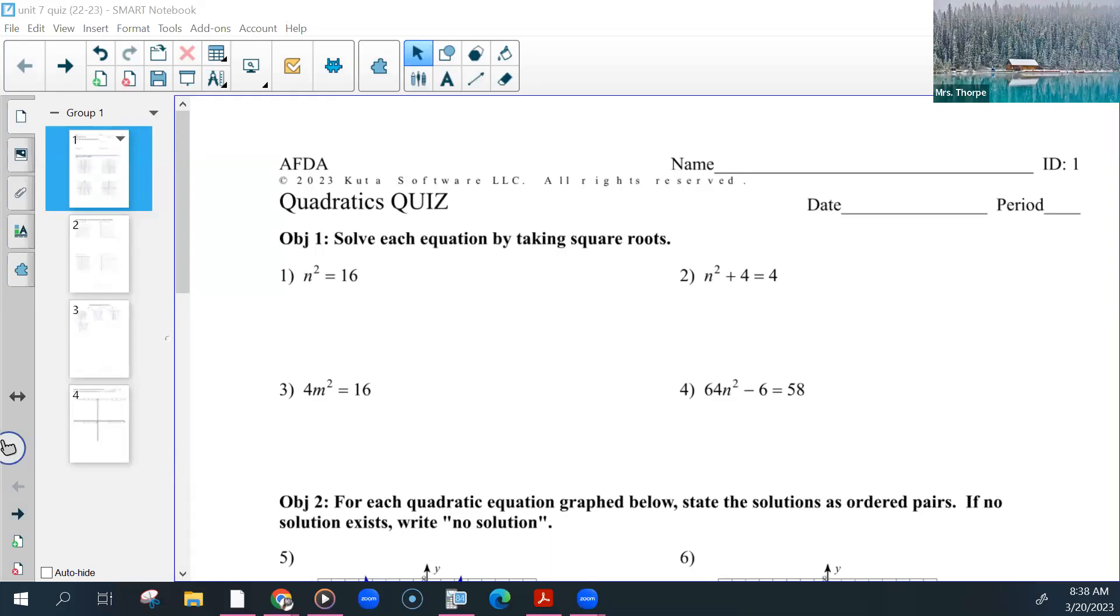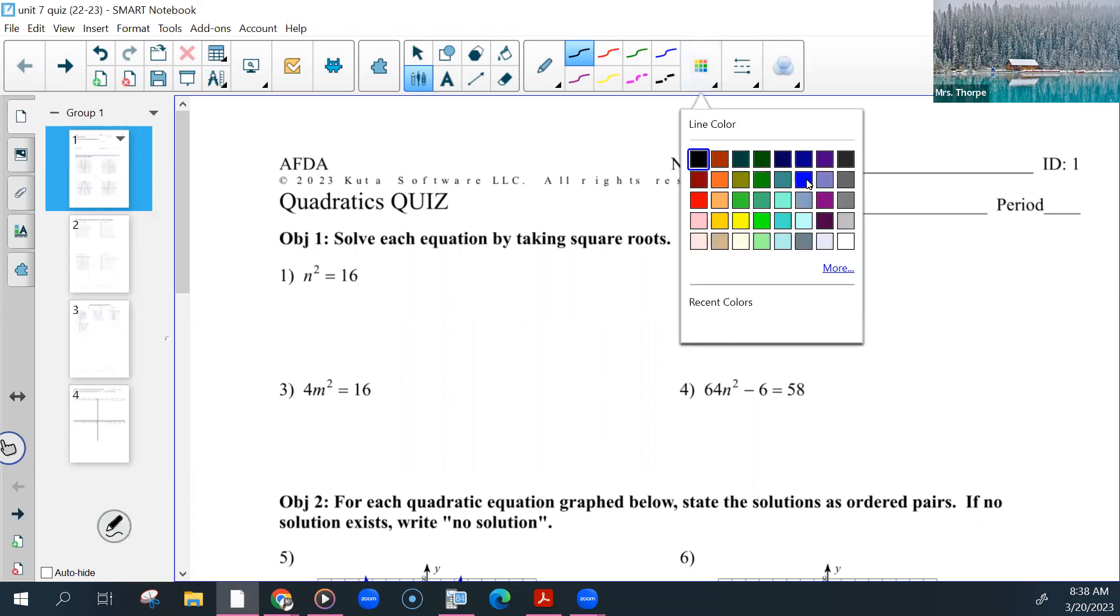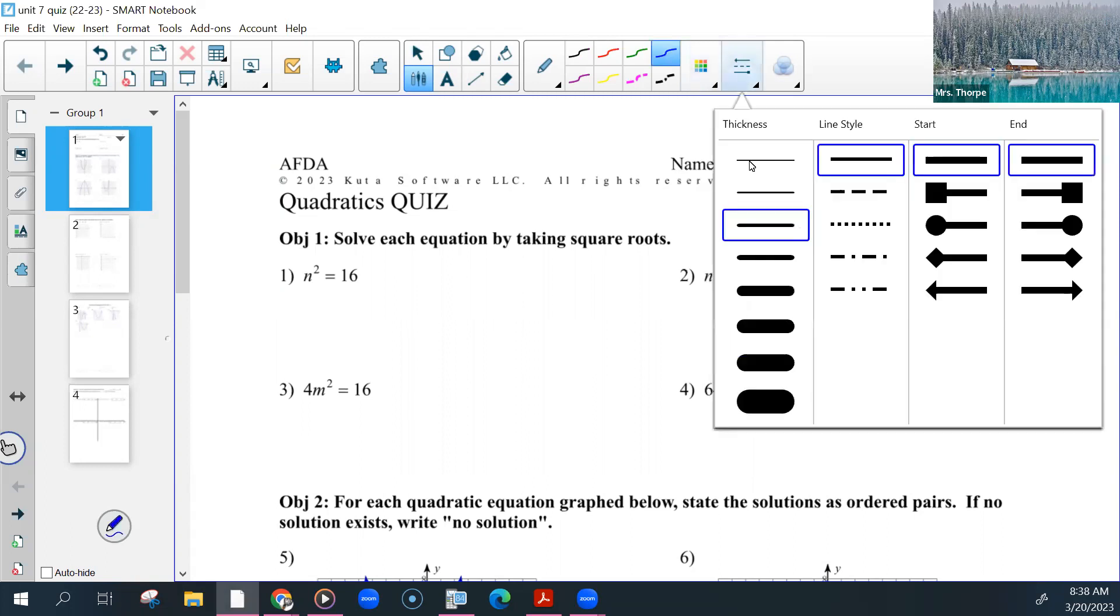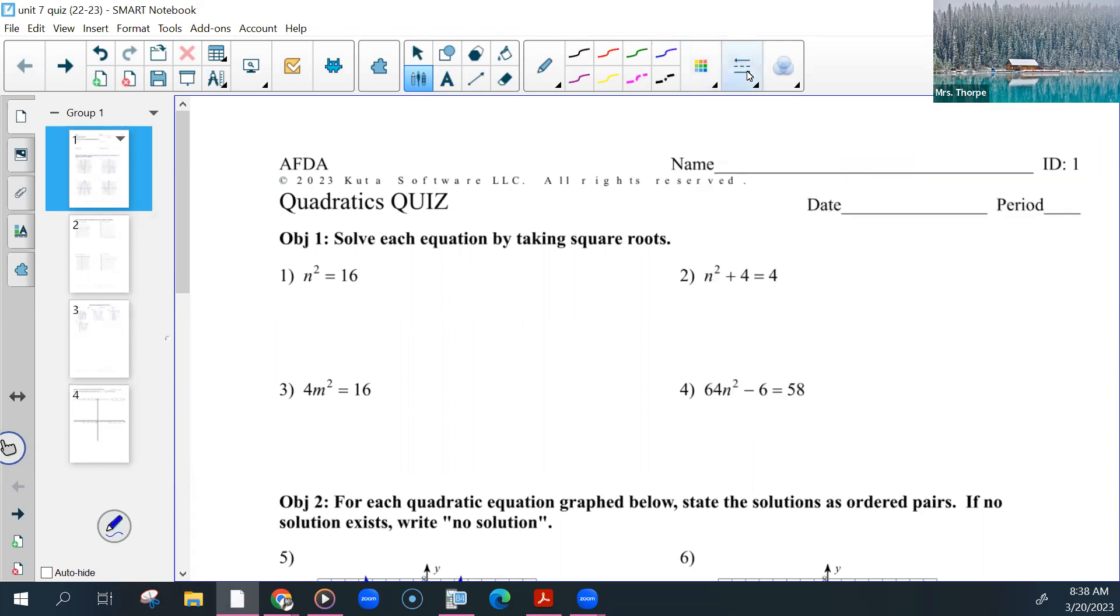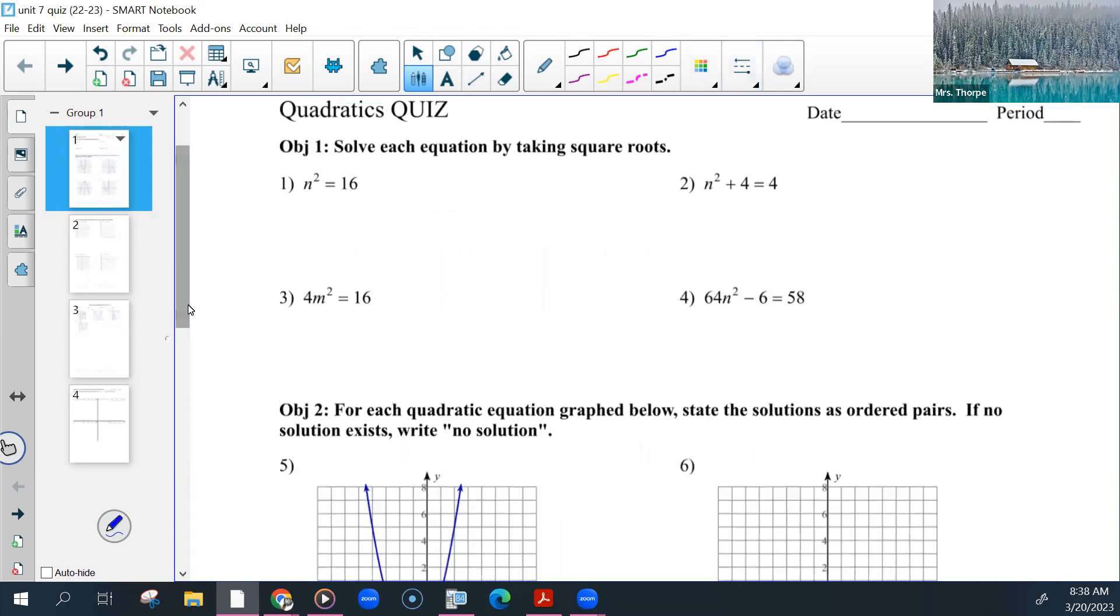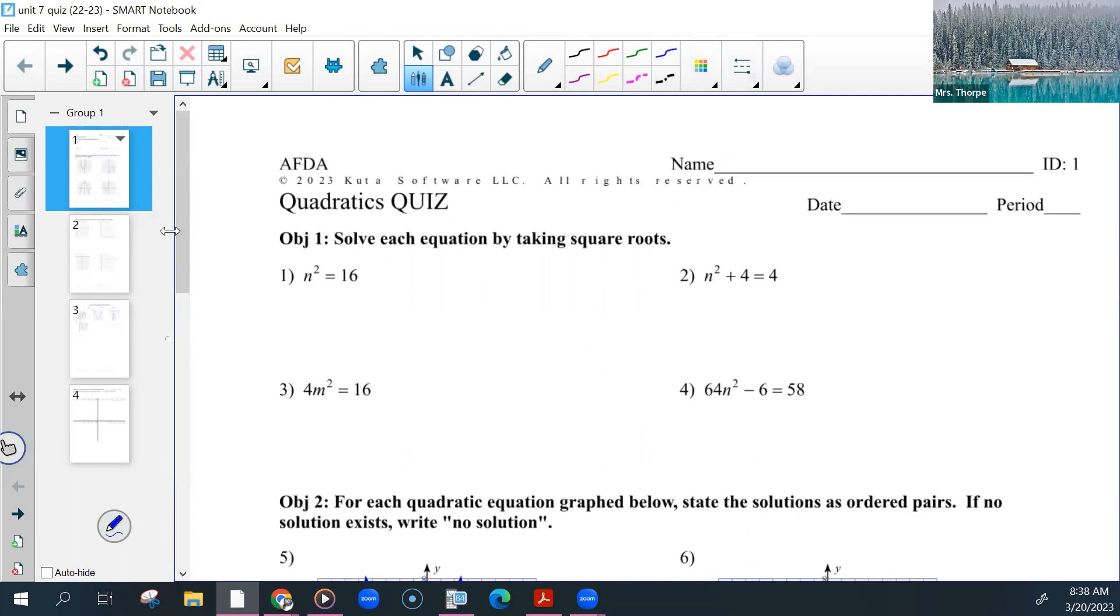So, as we're going through this, fix any mistakes on yours. Get another sheet of paper, write it off to the side, whatever, so that you don't make the same mistakes on the test. Starting with the first section, you had to solve these by taking the square roots. If you didn't show that you took the square root, you missed points, because that's the point of this.